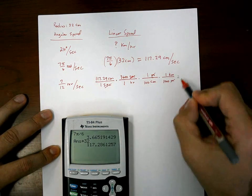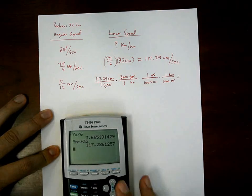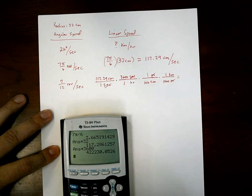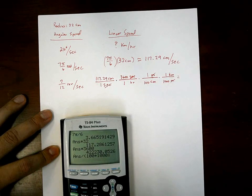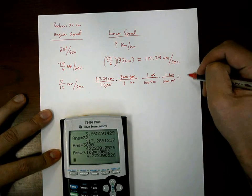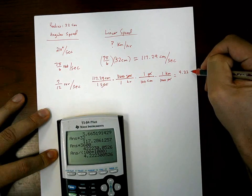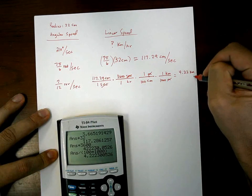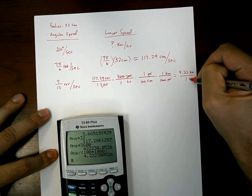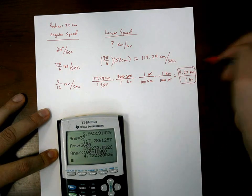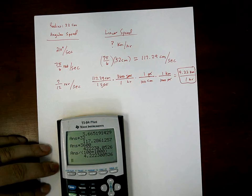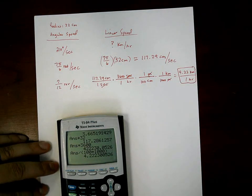Multiply across the top: the exact value times 3,600 times 1 times 1, divided by 100 times 1,000 — that's why there are 100,000 centimeters in a kilometer. The result is 4.22 kilometers per hour, which made sense because we guessed we were going about 5 kilometers per hour.